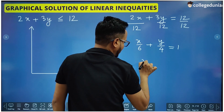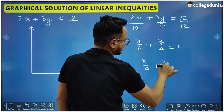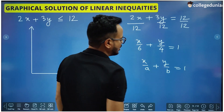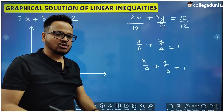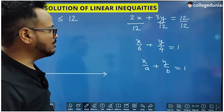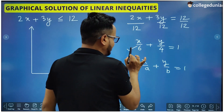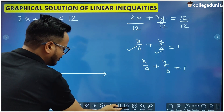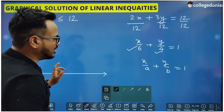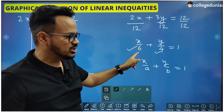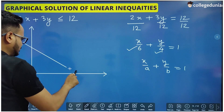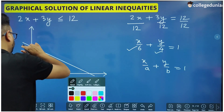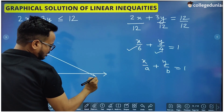You just divide the whole equation by 12 and what you get is x/6 + y/4 = 1. This form is called the intercept form of the line. The intercept form is x/a + y/b = 1, where a and b are the intercepts of the line on the x and y axes. The intercept is the distance from the origin to the point where the line cuts the axis. Here, x-intercept is 6 and y-intercept is 4, meaning this line cuts the x-axis at 6 units from the origin and the y-axis at 4 units from the origin. We can easily draw the line using this method.